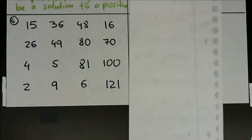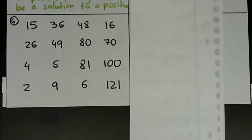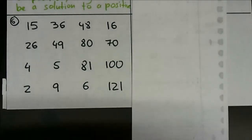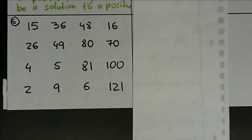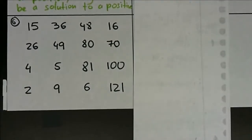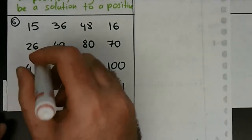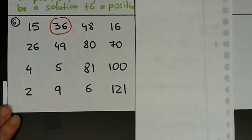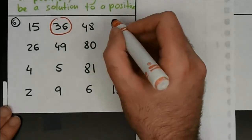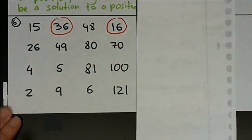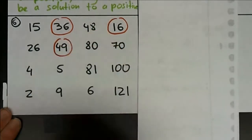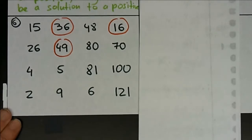Number six: you're asked to circle the numbers that are perfect squares, so you're looking for anything that can potentially have exponential forms. So 15 — no, there's no two integers that can give us 15 multiplied together. 36 — yes, six times six or negative six times negative six, that works. 48 — nope. 16 works, four times four or negative four times four. 26 — nope, that's two times thirteen. 49 — seven times seven or negative seven times seven, that works. 80 — no. 70 — no.